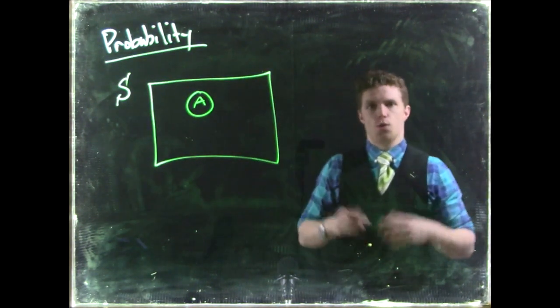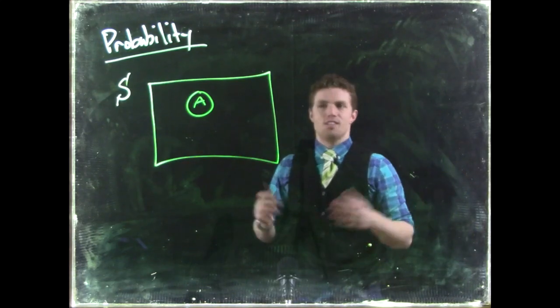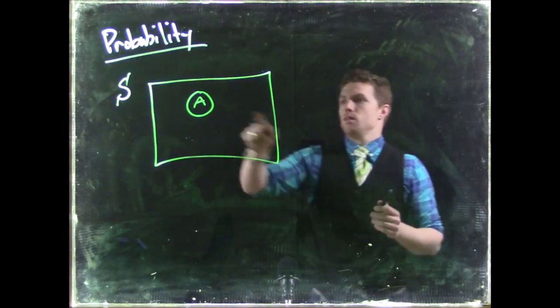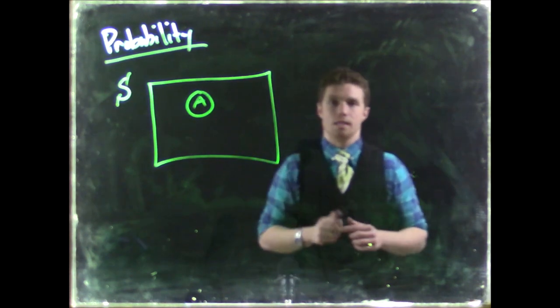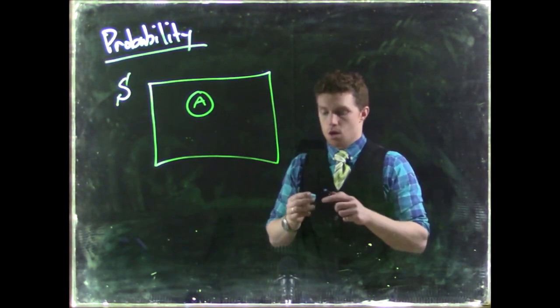So when you roll the dice you can also roll twelve, you can roll seven, there's lots of combinations, but event A is only interested in when the dice add up to three.